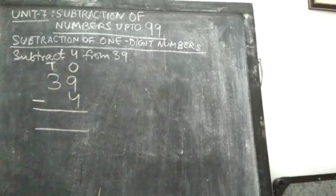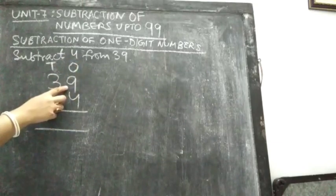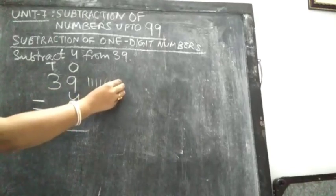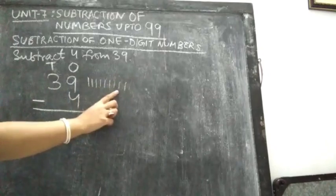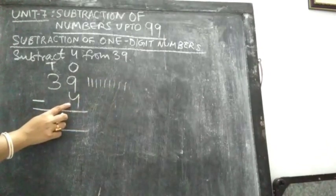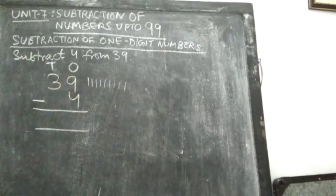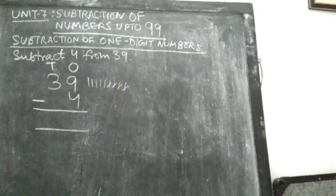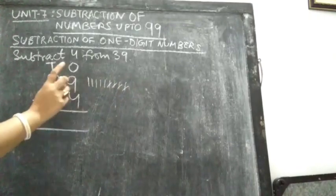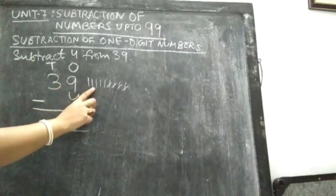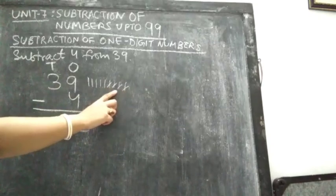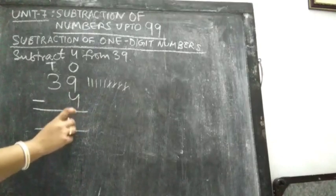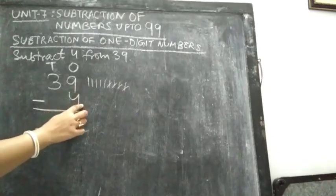First we have to subtract the 1s column. See the first number — we have to subtract 9 minus 4. So we have to draw 9 vertical lines: 1, 2, 3, 4, 5, 6, 7, 8, 9. The second number is 4, so we have to cut off 4 lines: 1, 2, 3, 4. So how many lines are remaining? 5 lines are remaining. So write 5 here. 9 minus 4 equals 5.